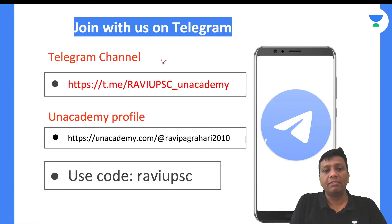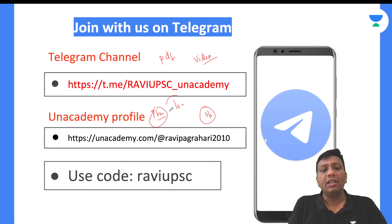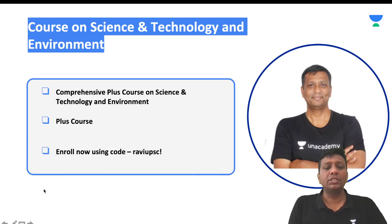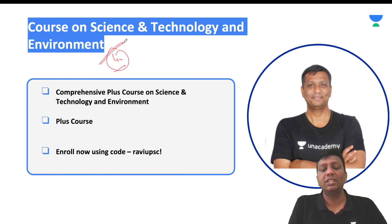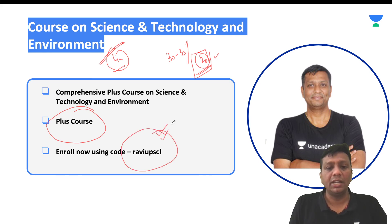My Telegram channel is where you can find all my PDFs and video links. My Unacademy profile is unacademy.com at ravipigari2010, where you can connect for my plus and special live classes. My code is raviupsc - use it during joining any courses for an extra 10% fee discount. My courses on science & technology and environment are running live on Unacademy. Science and technology and environment always change with time - they are not static subjects. This subject can give you 30 to 35 questions, and after attending my classes you can easily solve 20 of them.